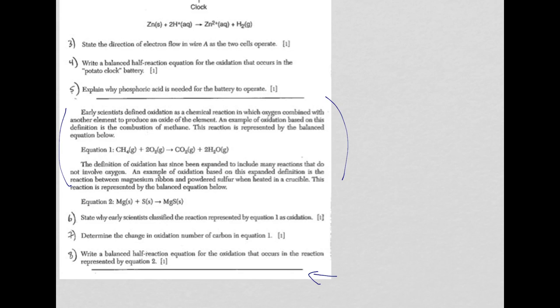Question 6 is asking you to state why early scientists classified the reaction represented in equation 1 as oxidation. It's already here in the reading passage, because it says early scientists defined oxidation as a chemical reaction in which oxygen combined with another element to produce an oxide of that element. So you could just say because oxygen reacted with CH4 to form CO2. There's your answer.